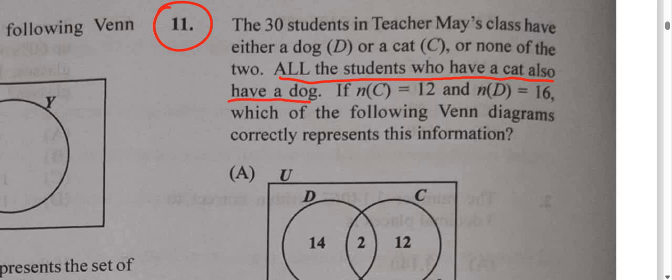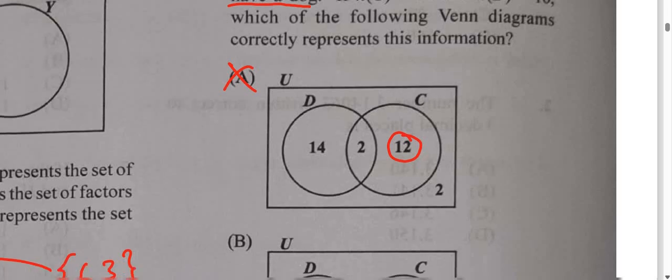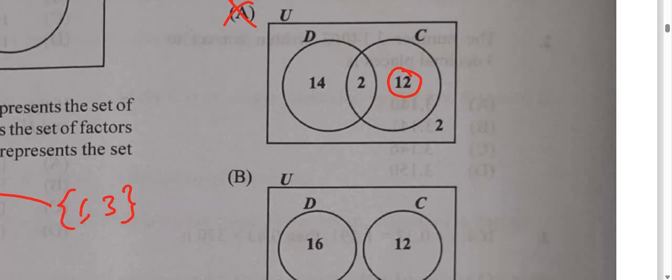So I will be able to eliminate. We have these 12 students—they have cats, but they don't have dogs. So this option is out. This is telling us there are students who have cats who do not have dogs.